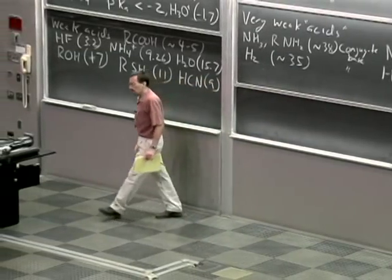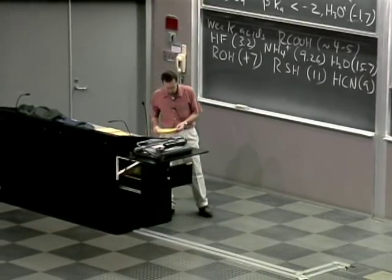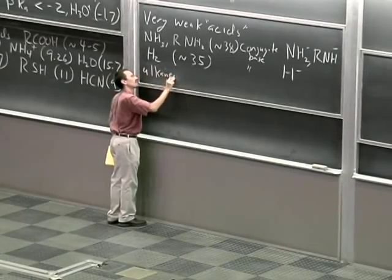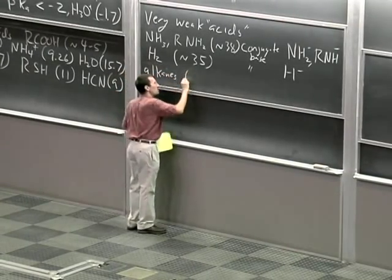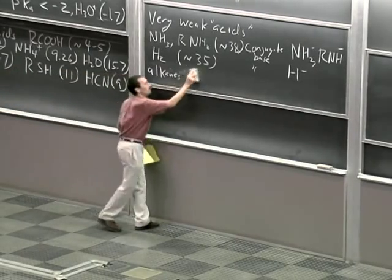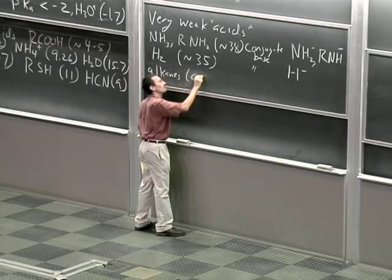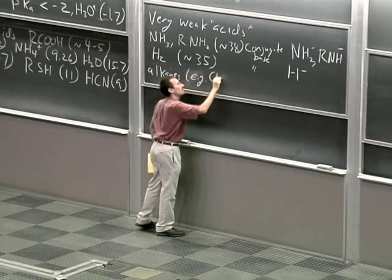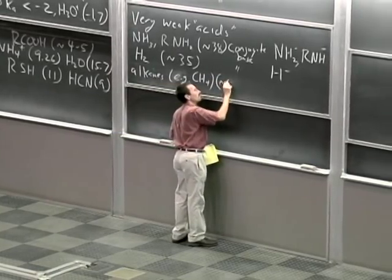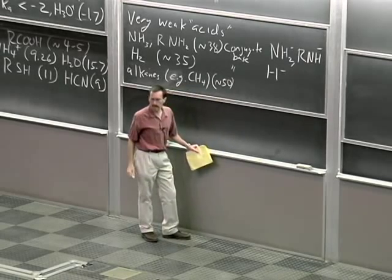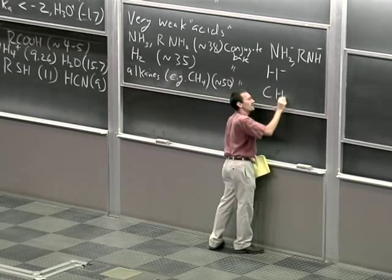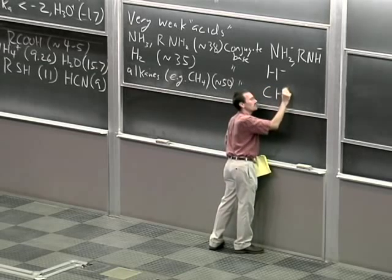We've talked a little about the pKa of methane before. In general, alkanes such as methane — I'll write CH4 — have a pKa of approximately 50. The conjugate base of methane would be CH3−.